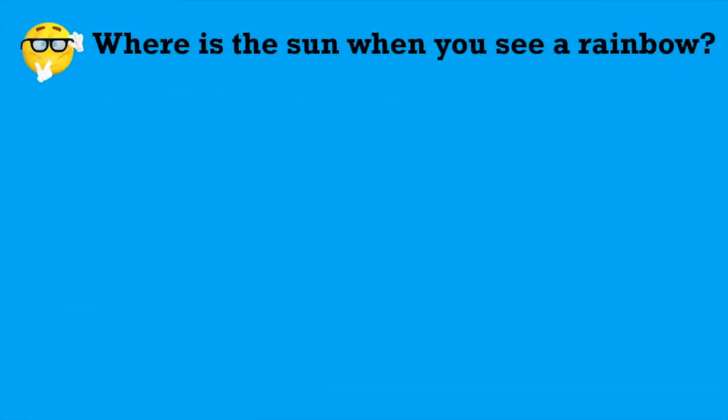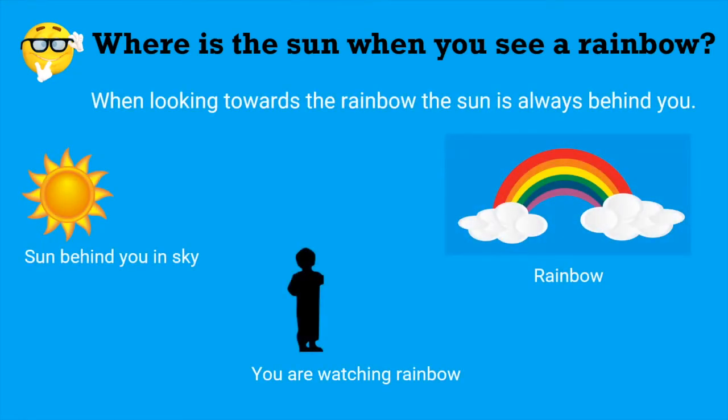Next question: where is the sun when you see a rainbow? Always keep in mind, whenever you are looking towards the rainbow, the sun is always behind you.